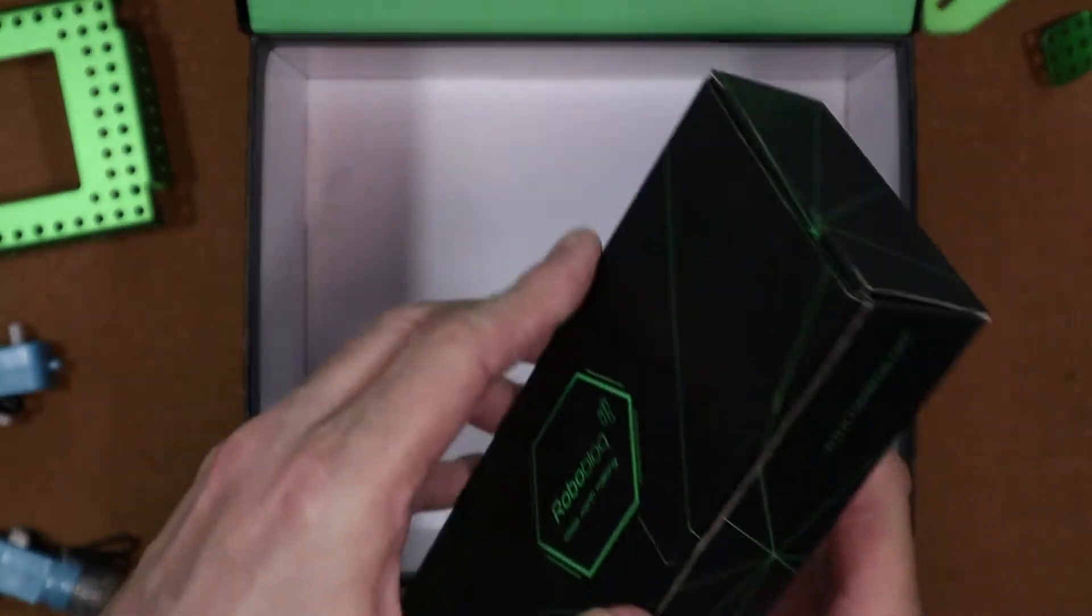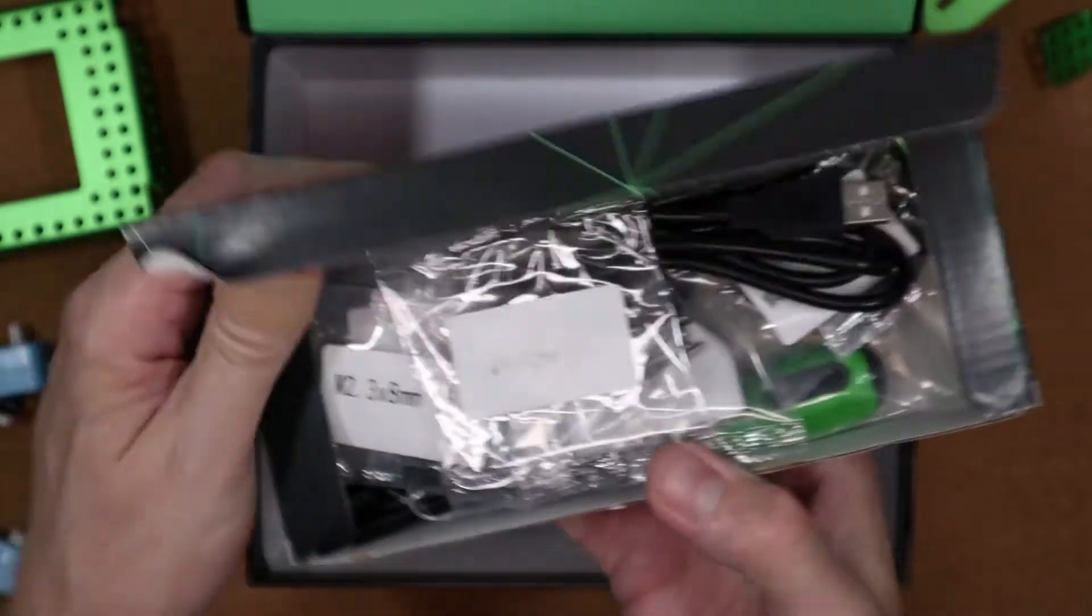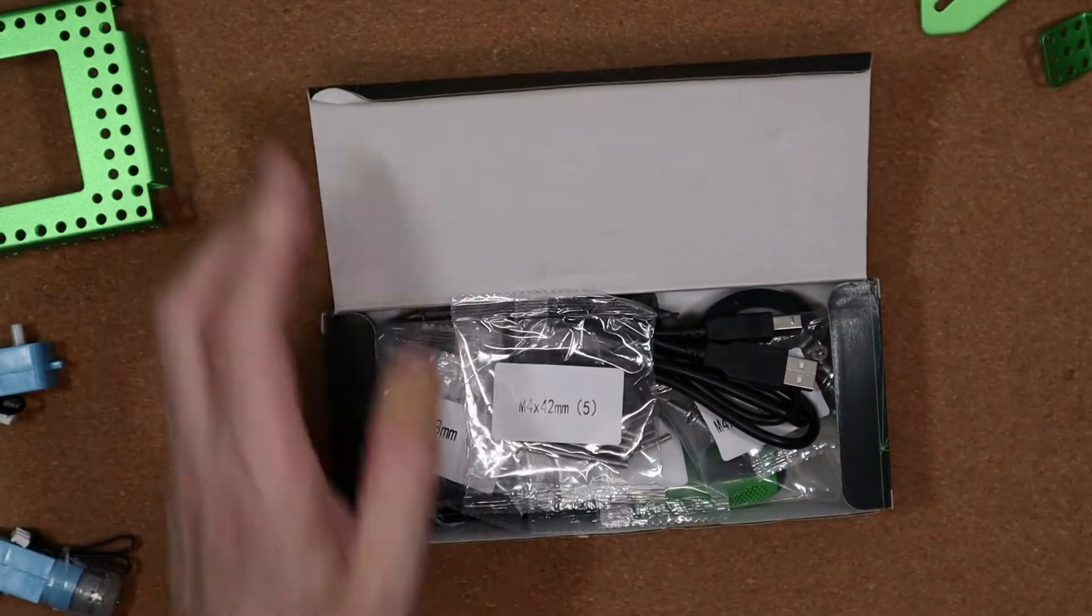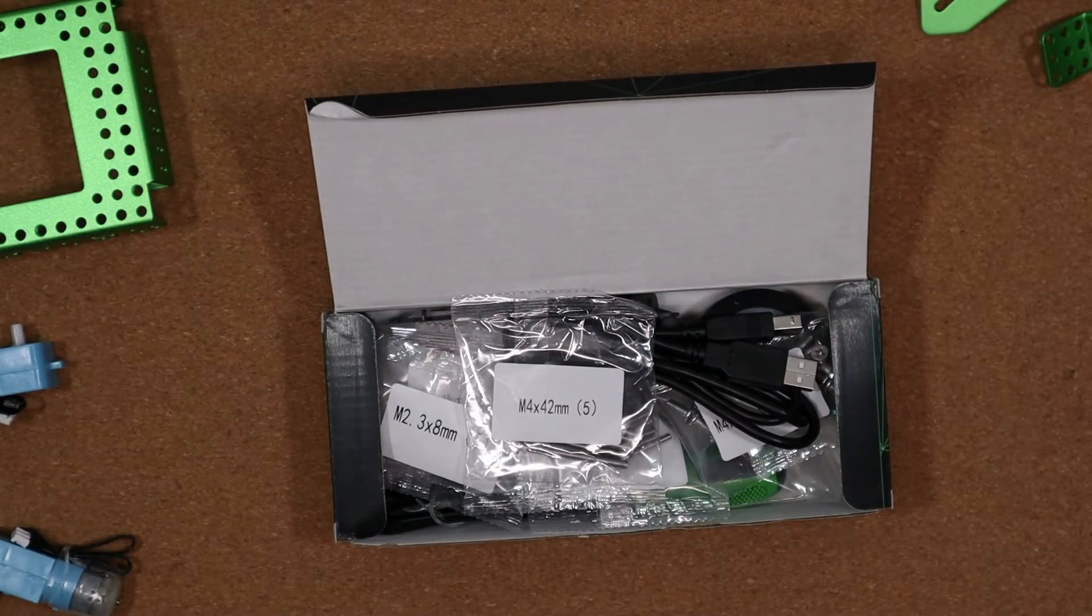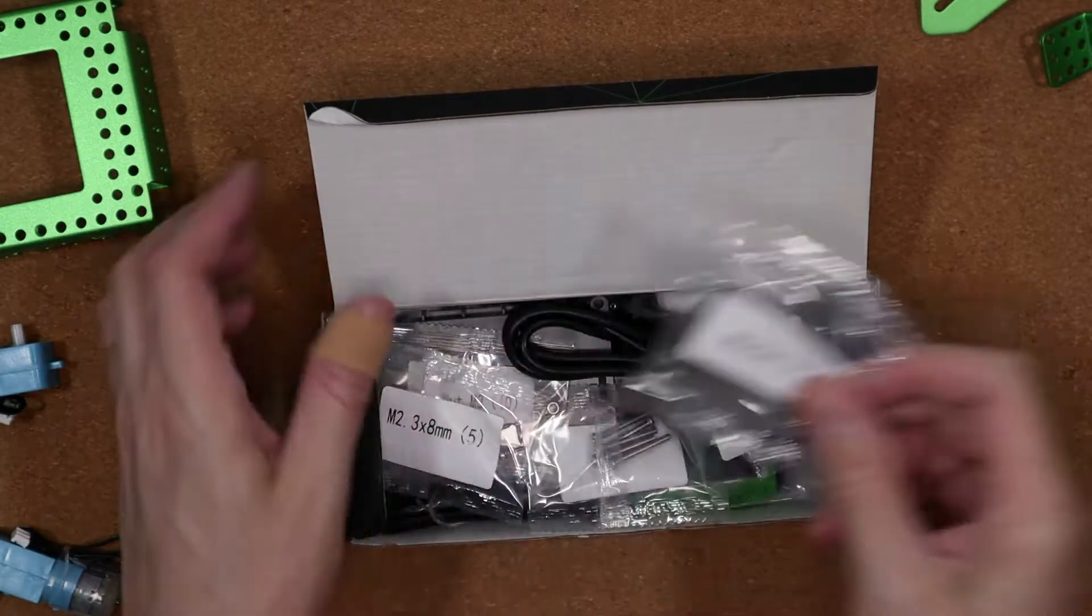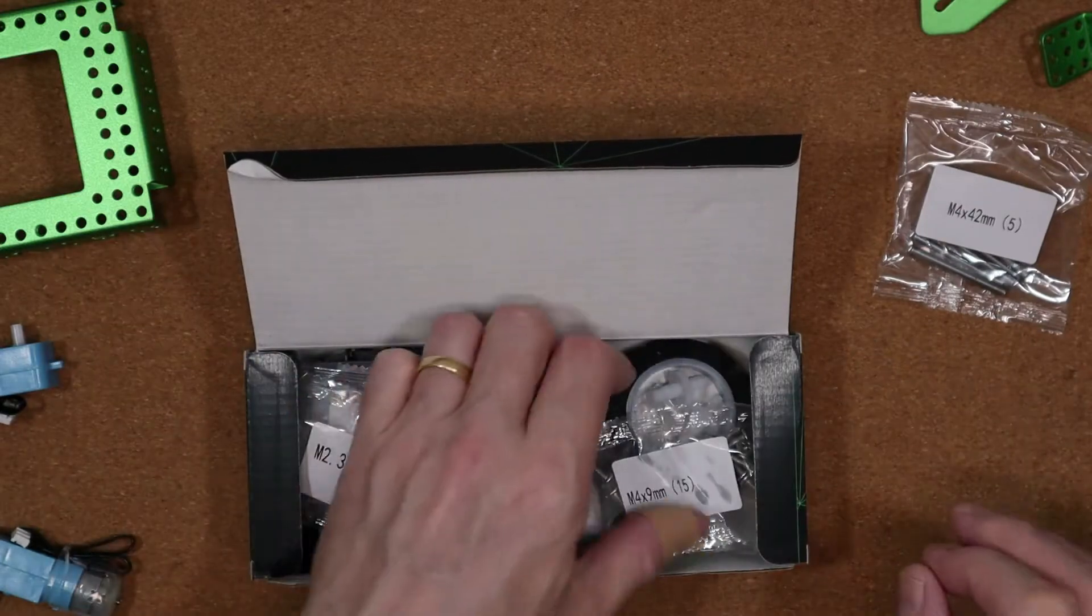Finally in the third level there's the box with everything else from the screwdriver that you'll use to put it together to the nuts, bolts, connecting cables and battery pack. In case you're wondering, it'll take six AA batteries which are the only thing not included in the kit.